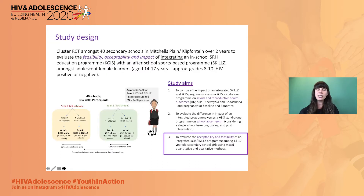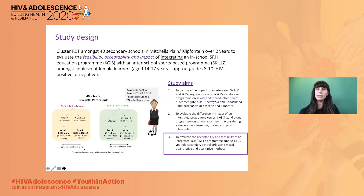Our study design was a cluster randomized trial in 40 secondary schools engaging female learners aged 14 to 17. We had three study objectives. The first looked at the impact of the integrated program on HIV, chlamydia, gonorrhea, and pregnancy. The second looked at the impact on school absenteeism, and the third evaluated the acceptability and feasibility of the integrated program. The third objective we'll focus on today.